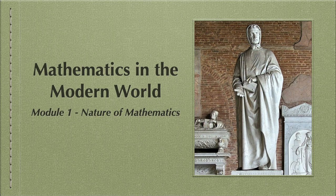Hi there everyone. We're now on this next video in Mathematics in a Modern World, Module 1, which is the nature of mathematics. Before this, we have two videos which illustrate the Fibonacci numbers and the Fibonacci sequence, and the second one is the illustration of the golden ratio and how it can be derived from the continuous sequence of the Fibonacci numbers.